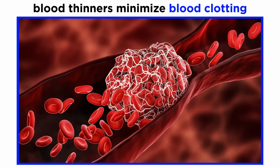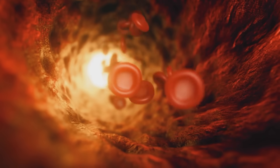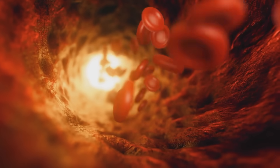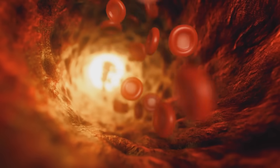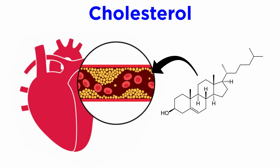These are drugs that either minimize blood clotting, otherwise known as blood thinners, or conversely prevent excessive blood loss after an injury. But before we get to those, there is another type of drug that regulates a particular substance found within the bloodstream: cholesterol. In this tutorial, we will discuss cholesterol and its implications in cardiovascular disease, followed by ways that pharmacology can modulate cholesterol biology.